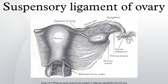The suspensory ligament originates from the mesonephros, which, in turn, originates from intermediate mesoderm. The prenatal development of the suspensory ligament of the ovary is a part of the development of the reproductive system.